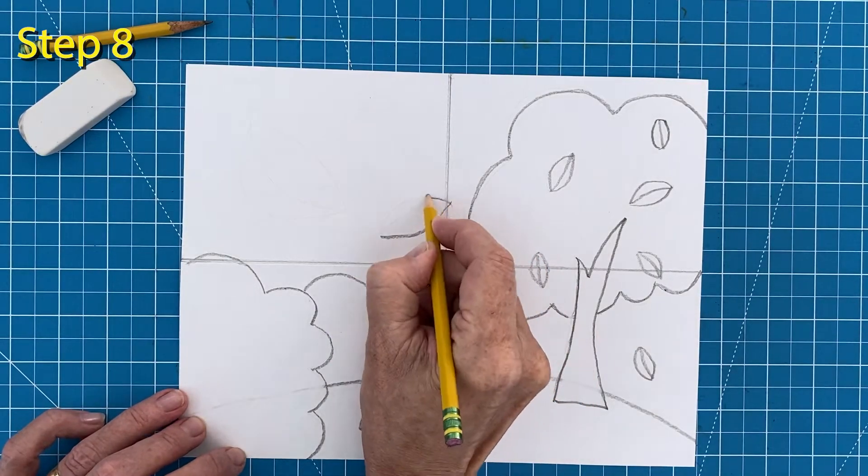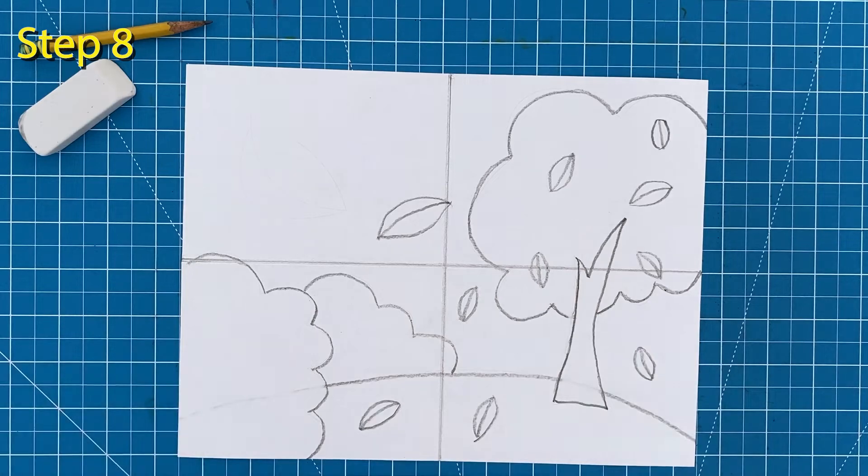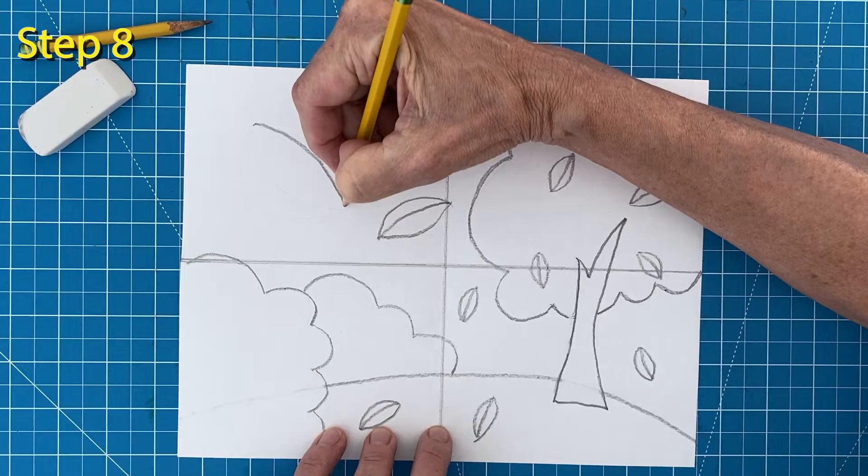Step number eight. Draw a larger leaf just to the left of the tree. And then draw an even larger one to the left of that.